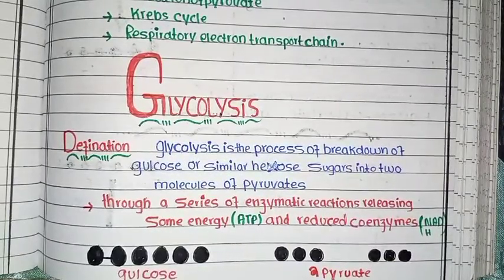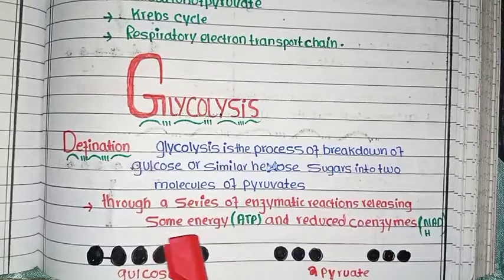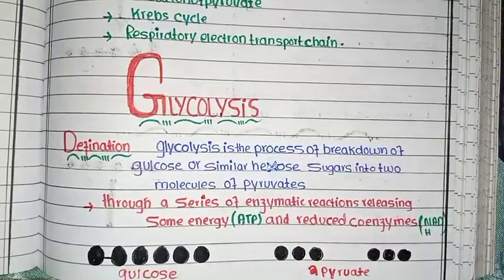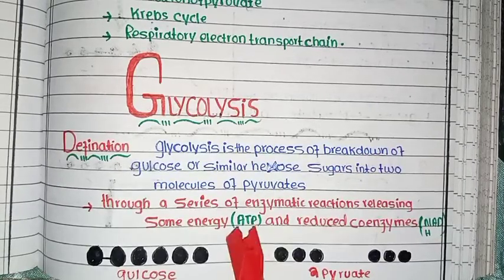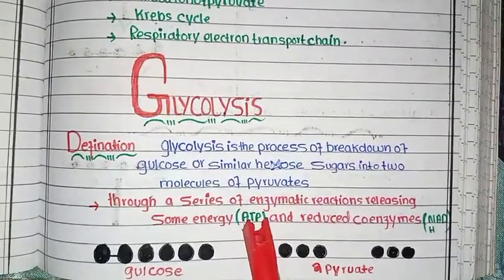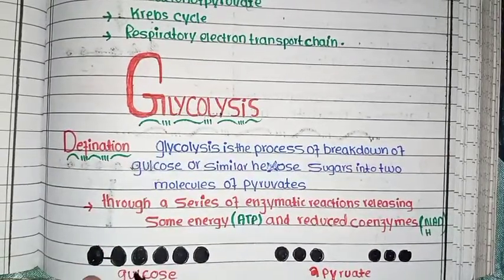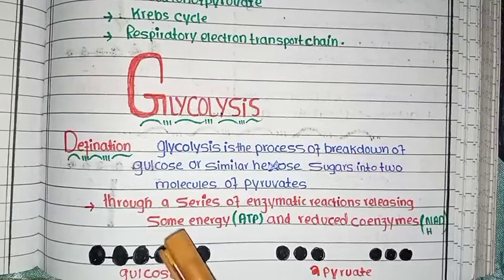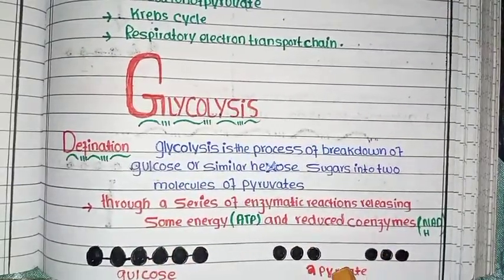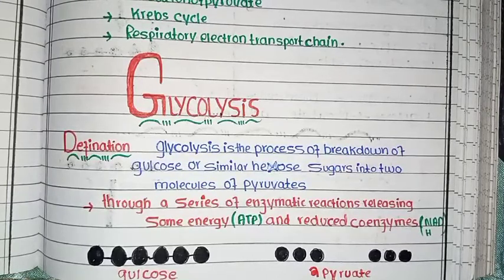Glycolysis is a series of enzymatic reactions releasing some energy as ATP and reduced coenzymes such as NADH. For example, glucose has 6 carbons; it is broken down into two 3-carbon pyruvate molecules. This process is glycolysis — when there is a breakdown of glucose into two pyruvate molecules.